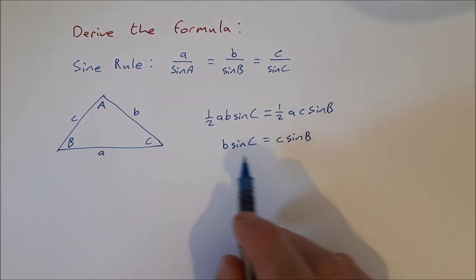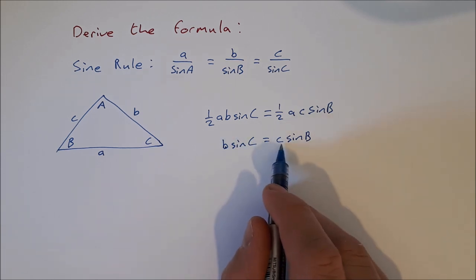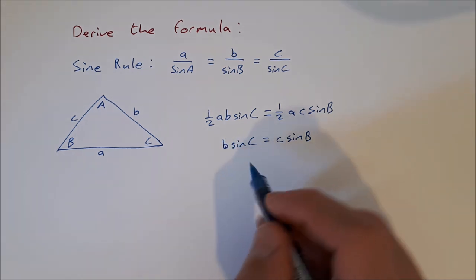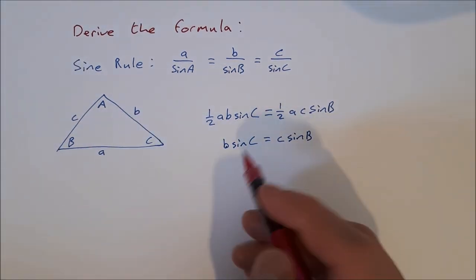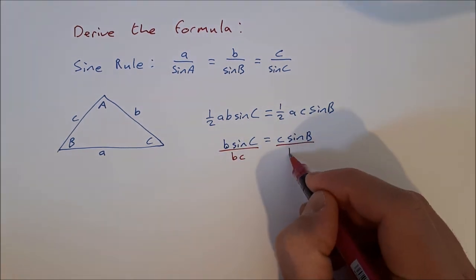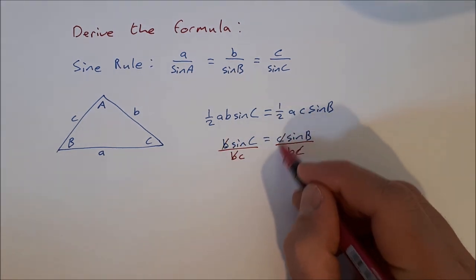Now, if I divide both sides by b and divide both sides by c. So if I divide this side by b, the b's will cancel out. And if I divide it by c, I'll just do it out. Divide by bc and divide by bc. The b's here will cancel, and the c's here will cancel.